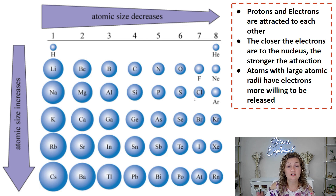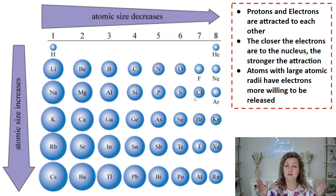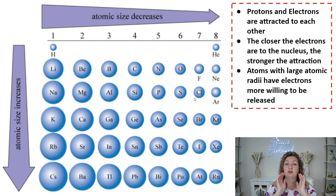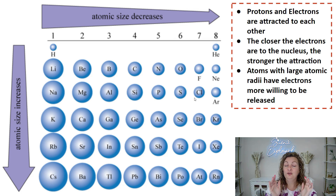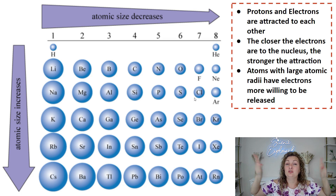Protons and electrons are opposites — positive and negative — so they attract one another. If you get an atom that has electrons really close to the nucleus, the positive protons pull them in, the atom becomes smaller, and those electrons are a lot less likely to leave because there's more attraction. If you have a larger atom, it's going to be a lot easier for those electrons far away from the nucleus to be lost, because there's not as much attraction, especially if there are multiple shells within your atom. Multiple energy levels mean you have other negative electrons creating a shielding effect, because those electrons repel each other. So the nucleus doesn't have quite as strong of a hold on the outer electrons, and they are more easily lost.